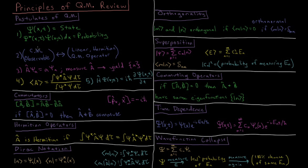The second postulate is that for every classical mechanical observable — every measurable property like position, momentum, or energy — there corresponds a linear Hermitian quantum mechanical operator. This is why operators are so critical in quantum mechanics: they give us a way to measure properties and get back to classical quantities.